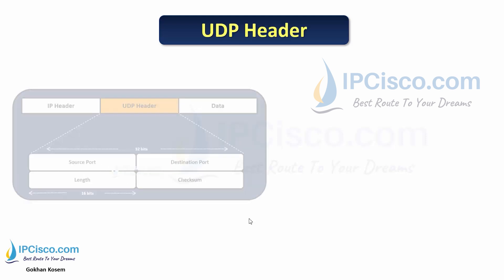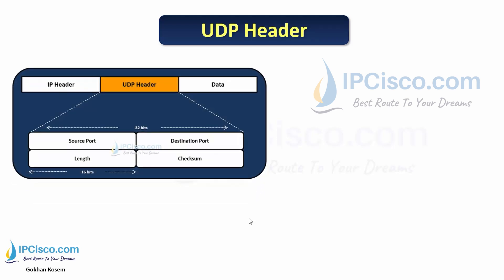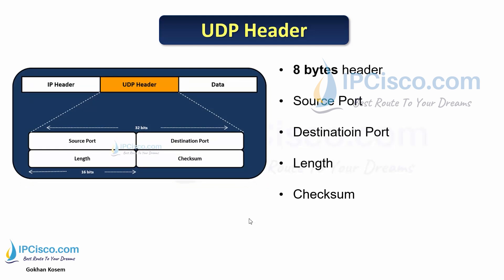What about the UDP header? Here are the parts of a UDP header. A UDP header is 8 bytes long and has 4 parts: source port, destination port, length, and checksum.